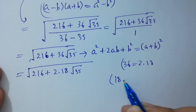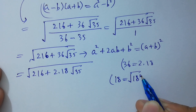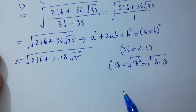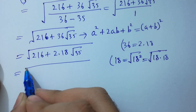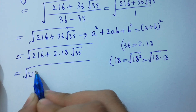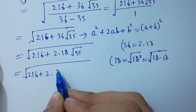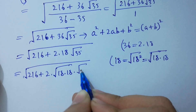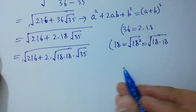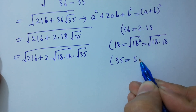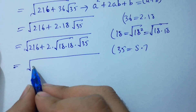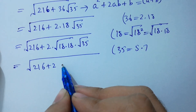Since 18 equals square root of 18 times square root of 18, and square root of 216 gives us 18 times 18, we can write square root of 216 plus 2 times square root of 18 times square root of 18 times square root of 35. Since 35 equals 5 times 7, we get 216 plus 2 times square root of 18 times 5 and 18 times 7.